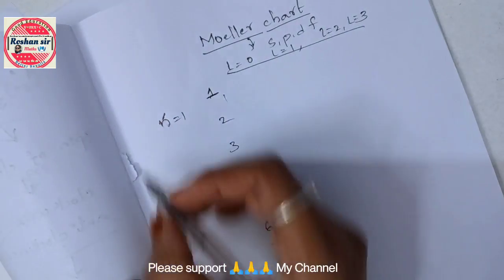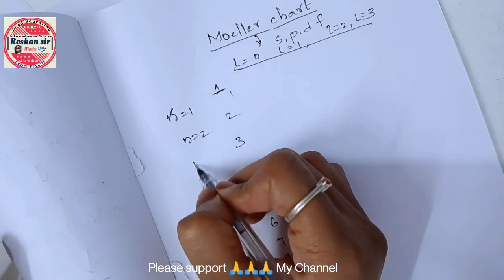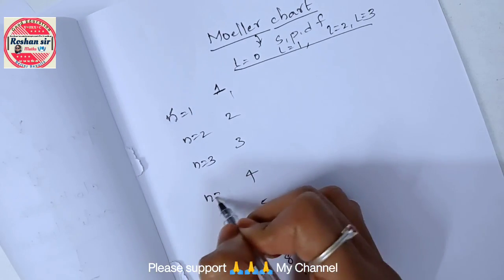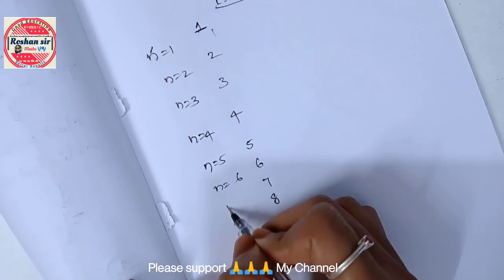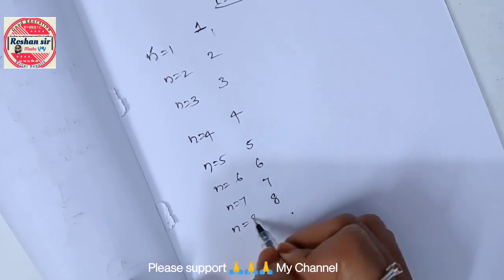At the left hand, n equal to 1 same up to 8. n equal to 2, n equal to 3, n equal to 4, n equal to 5, n equal to 6, n equal to 7, and n equal to 8.